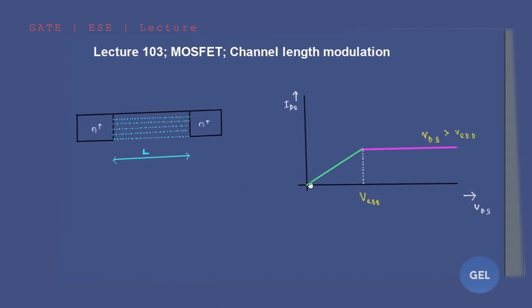Let's understand the output characteristics curve. In this output characteristics curve, you have the linear region and the saturation region. Channel length modulation always happens in the saturation region, because the linear region ends quickly and the IDS constant saturation current region lasts longer — that is why channel length modulation occurs in this region.